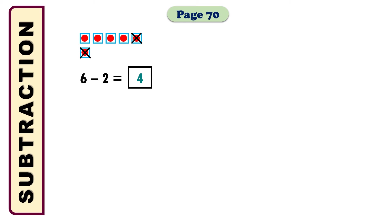In the next math it says 2 minus 1 equals what? I am taking 2 boxes and I have to cross 1 box among the 2. So how many remains? I can count only 1 box remains, so the answer will be 1.